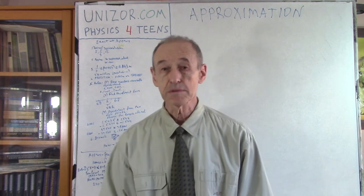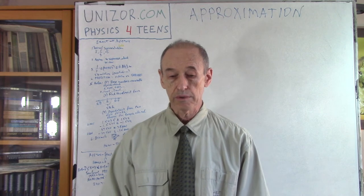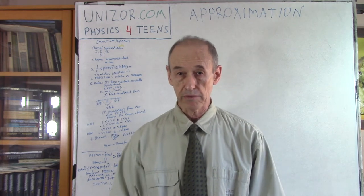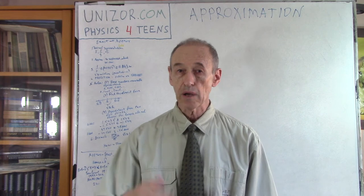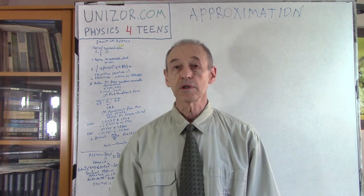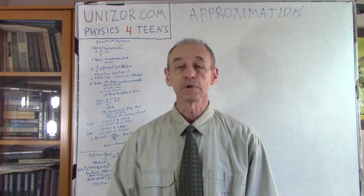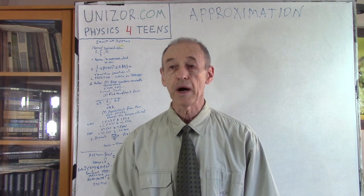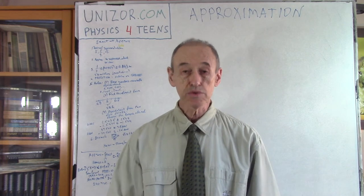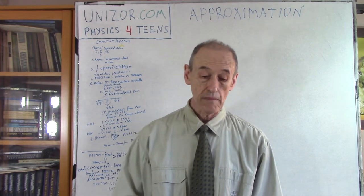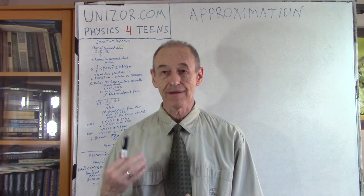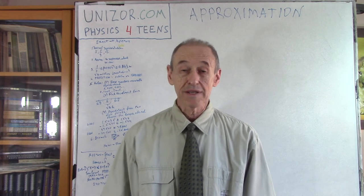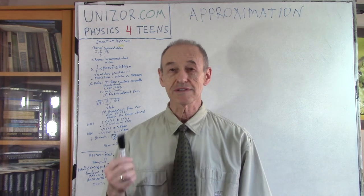Let's talk about approximation of real numbers. Real numbers are quantitative representations of everything. We have integer numbers when counting 1, 2, 3, etc. We have rational numbers, which are a ratio between two integers. We have irrational numbers like the square root of 2 or pi. Now, we would like to do something with these numbers, and it's not always possible with their exact value. For example, what's the distance between the Earth and the Moon? Well, it's changing, so there is no such thing as an exact number.